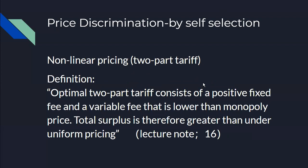I will mainly talk about non-linear pricing — specifically the two-part tariff. According to the lecture notes page 16, an optimal two-part tariff consists of a positive fixed fee and a variable fee that is lower than the monopoly price, so total surplus is therefore greater than under a uniform price.